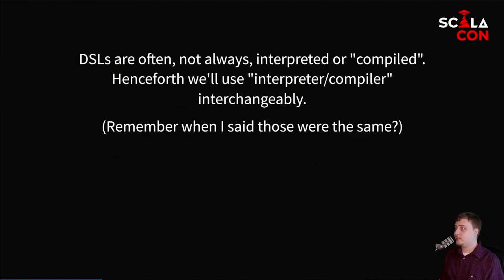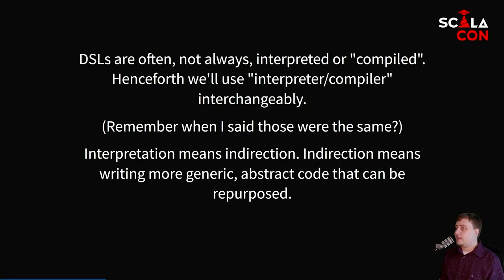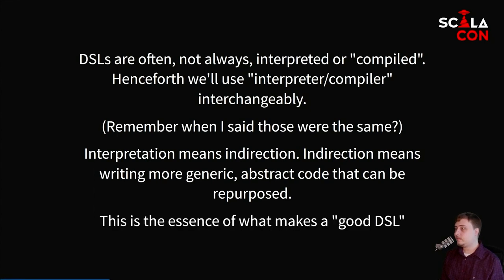I mentioned earlier that interpreters and compilers are kind of the same thing. Throughout this talk we're going to talk about the need for domain-specific languages to be interpreted or compiled sometimes but not all the time. When I say compiler, think interpreter. When I say interpreter, think compiler — they mean the exact same thing. The reason that they are sometimes interpreted or compiled is that we get a layer of indirection. When you're writing a language, you want to have that language separated from how it is implemented, and you want to write generic abstract code that only captures the particulars of the domain you were trying to model. In my opinion, this is what makes a DSL good — that it has that layer of indirection and that separation of concerns.